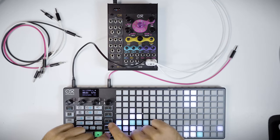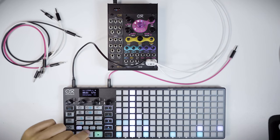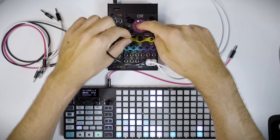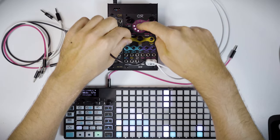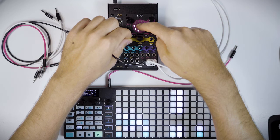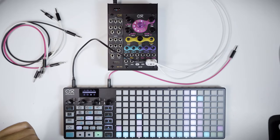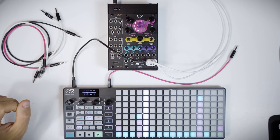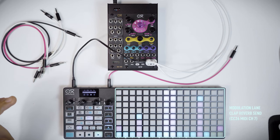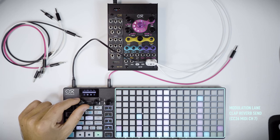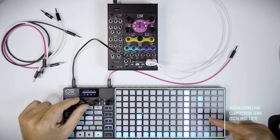Let's play everything together. We can send CC modulation by assigning the right CC number and MIDI channel. In this case the snare is on MIDI channel 7, and I have an automation of the reverb synth that we can enable — as you can see, this modulation lane controls the reverb synth of the snare only.